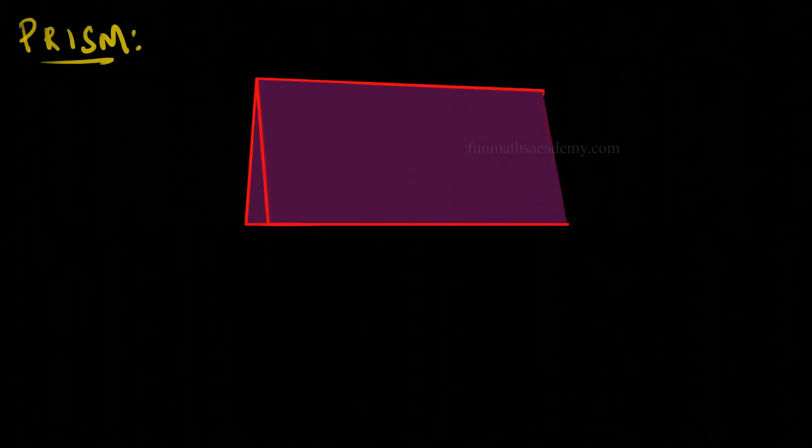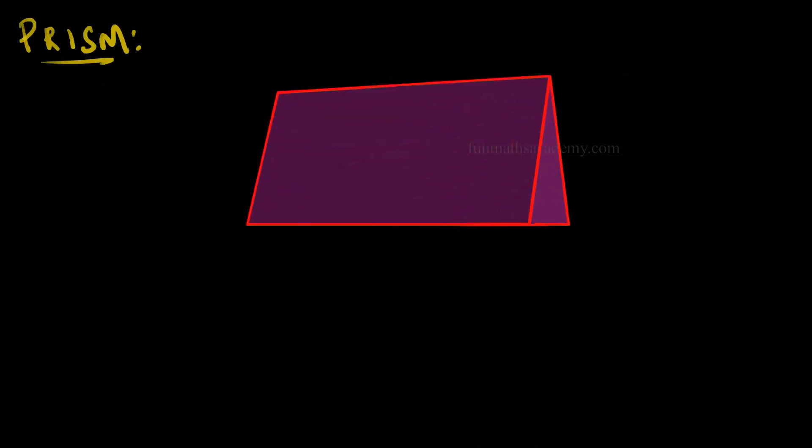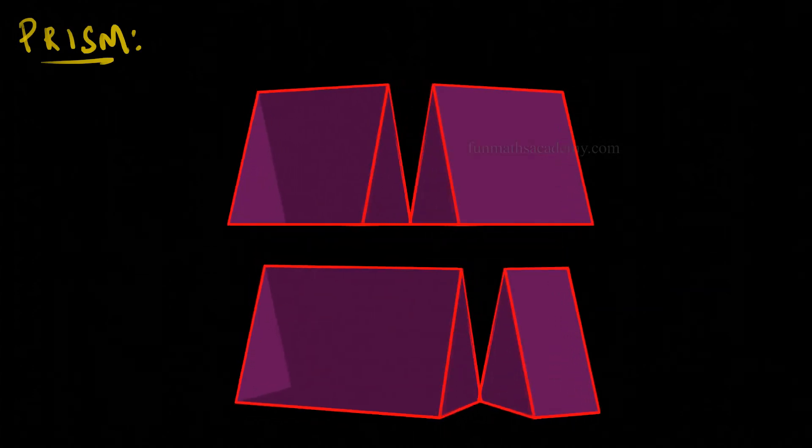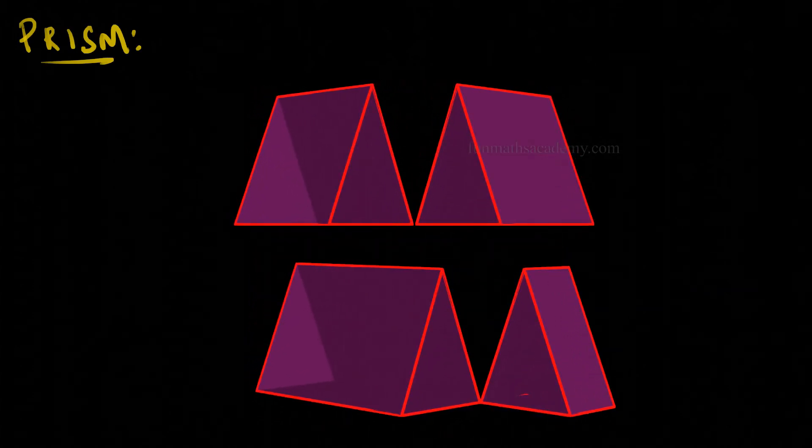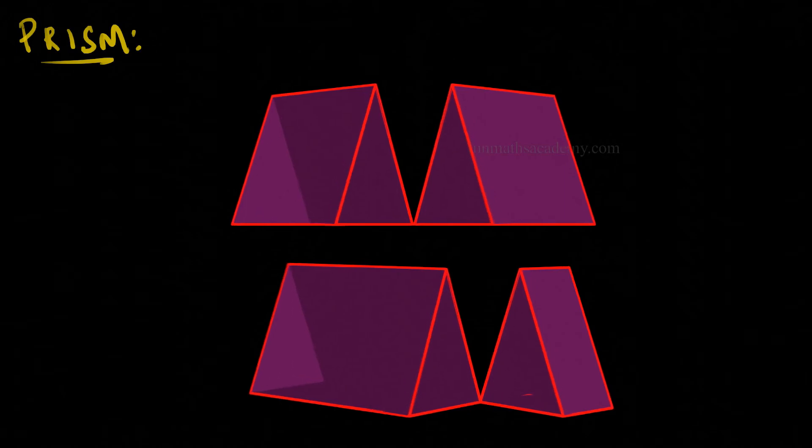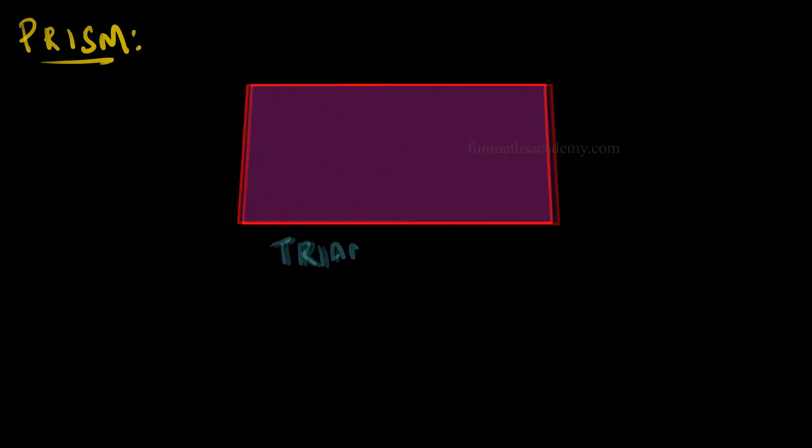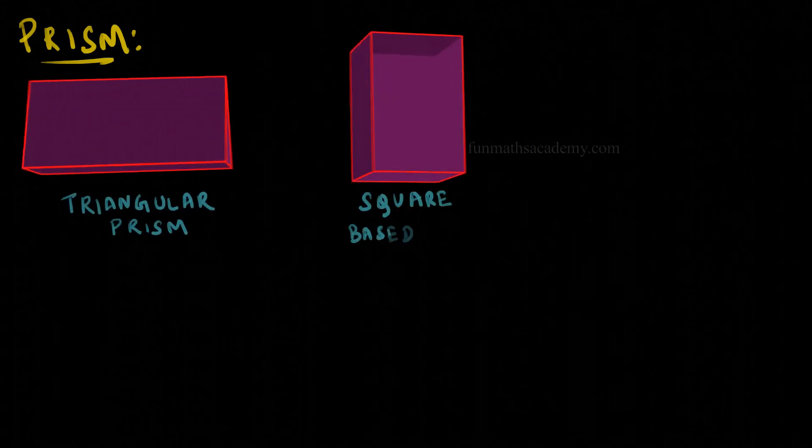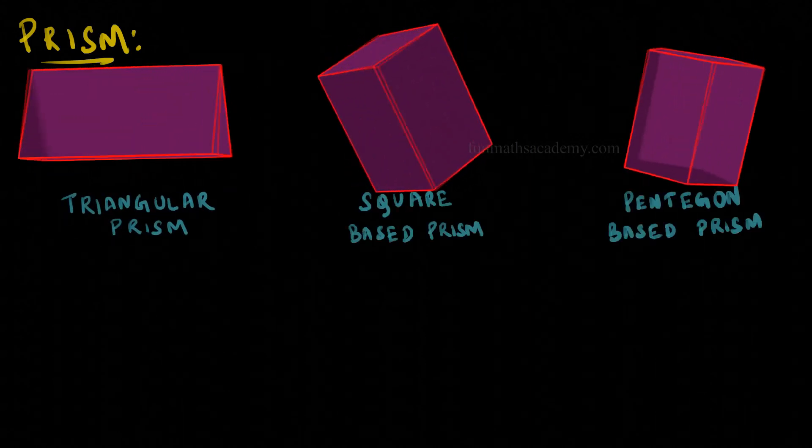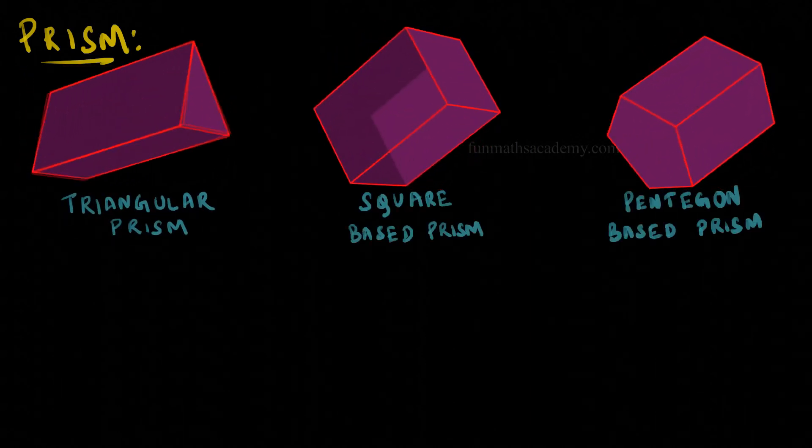A polyhedron with identical sides and same cross-section area, that is when you cut the shape anywhere across the surface and if the area is the same, then such a polyhedron will be called a prism. Some of the types of prisms are triangular prism, square-based prism, and pentagon-based prism.